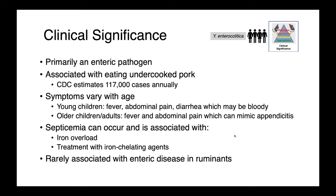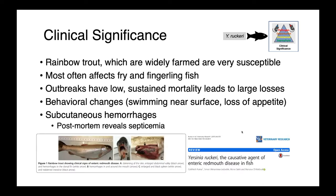Yersinia enterocolitica is primarily an enteric pathogen of people and is associated with eating undercooked pork. The CDC estimates around 117,000 cases annually, often associated with specialty food products like chitlins — pork intestine — prepared improperly. Symptoms vary with age: in younger children we see fever, abdominal pain, and diarrhea which may be bloody; in older children and adults, fever and abdominal pain can actually mimic appendicitis. Systemic infections can occur and are associated with iron overload, so these people are frequently also treated with iron chelating agents.